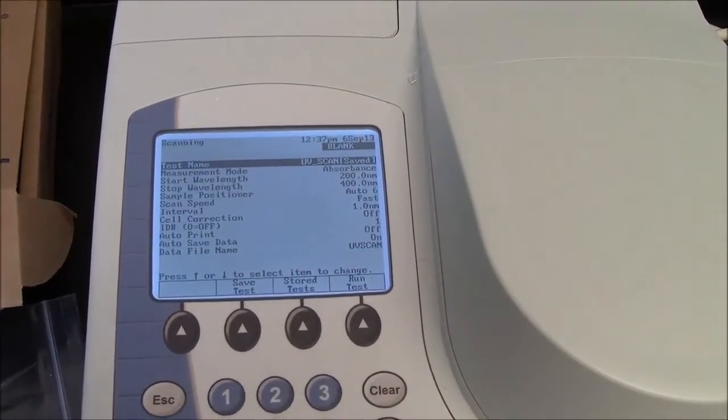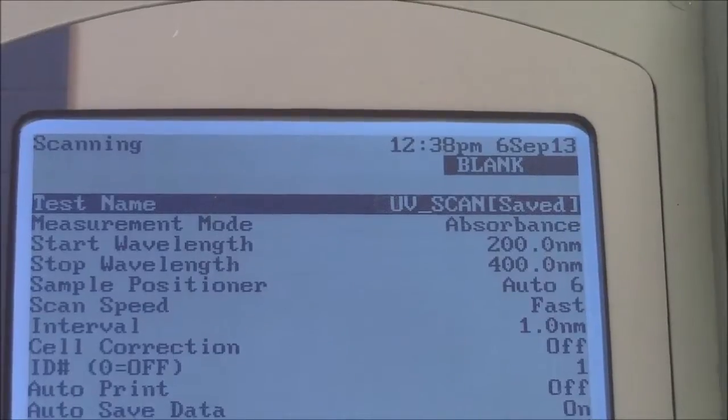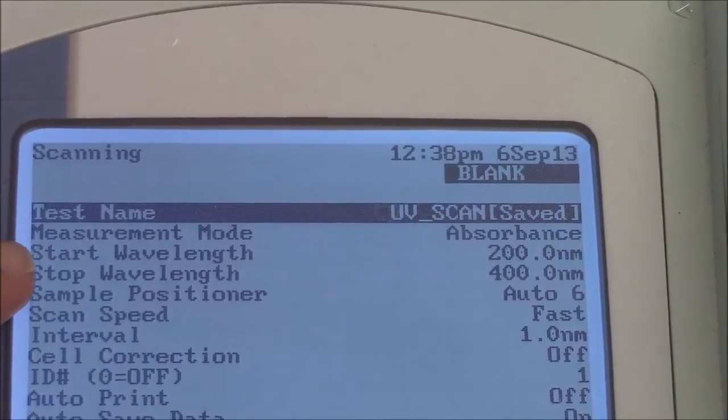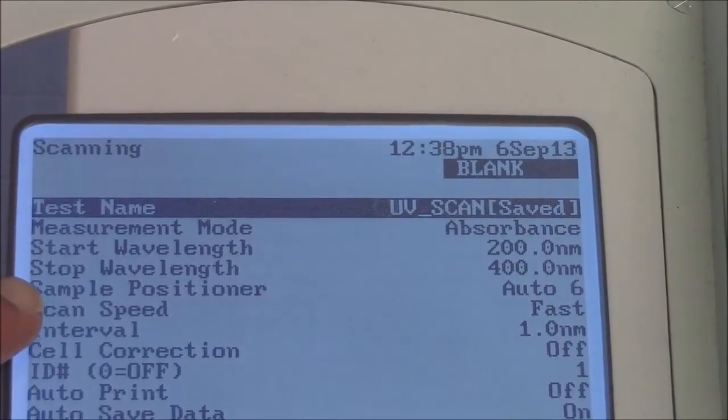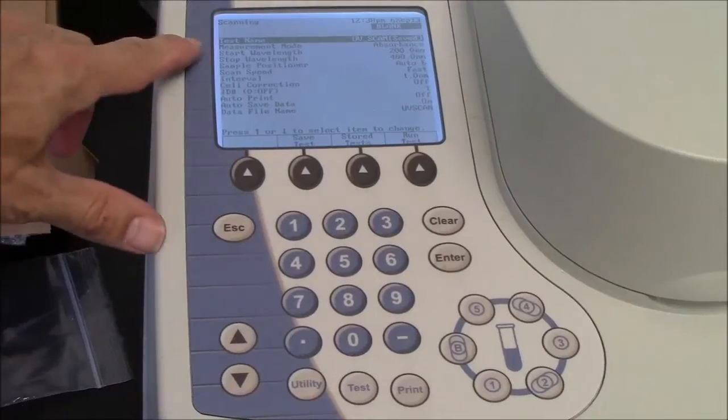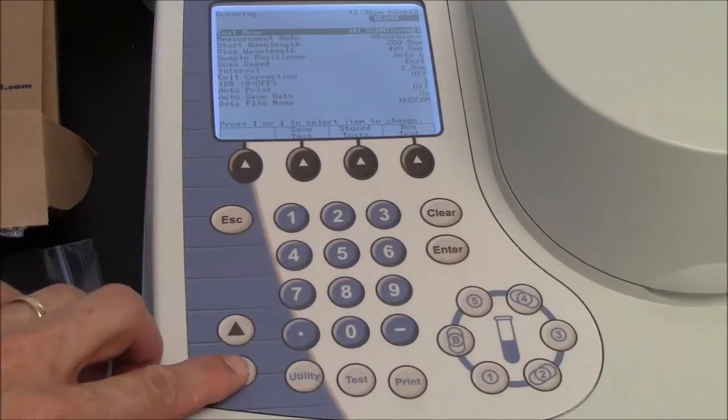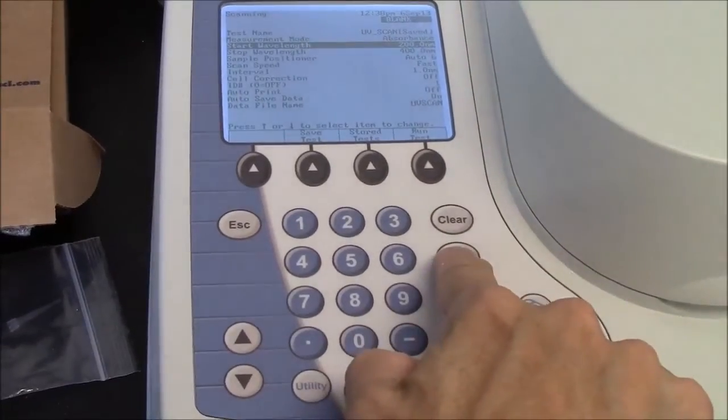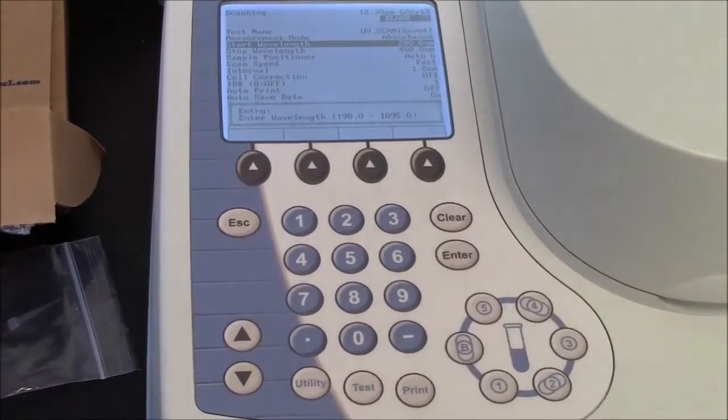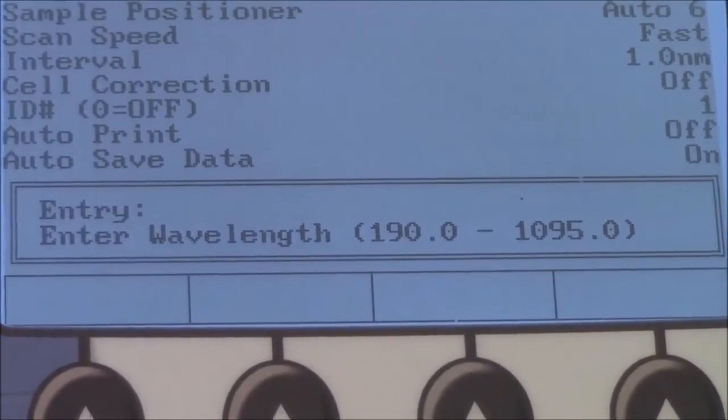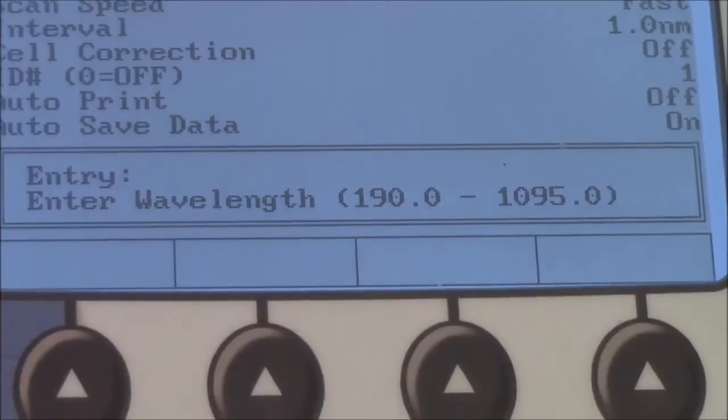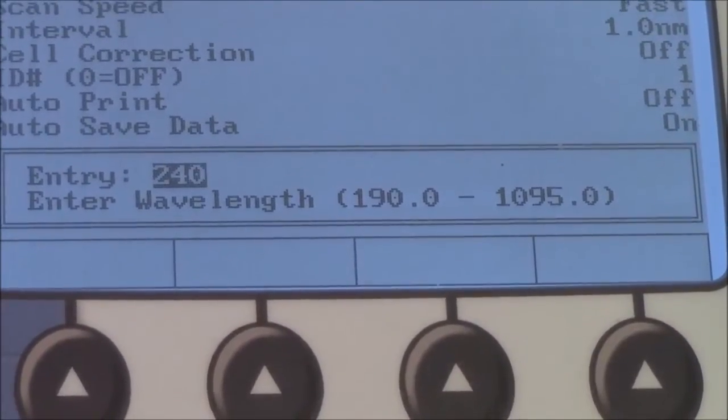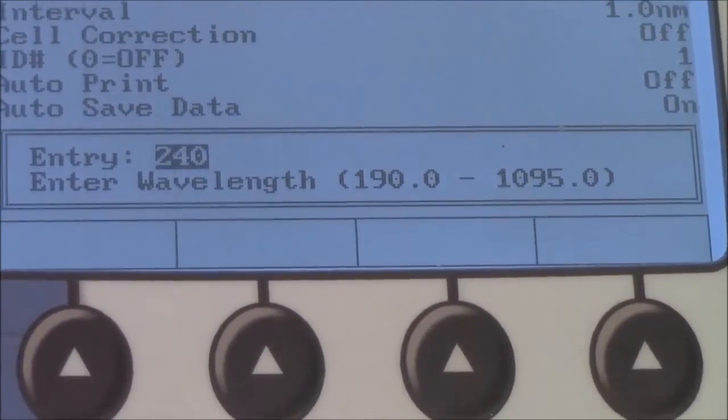And that takes me to a number of parameters. As a beginner, the only things you would really change is the wavelength range. Where do you want to start, and where do you want to stop scanning? To select the start wavelength, I have to use these arrows here. And I will press the Enter button. And now it asks me, what wavelength do I want to start scanning? So in this case, I'll say 240. So I'm just using the number pad to say 240, and that's nanometers. And I'll hit Enter.